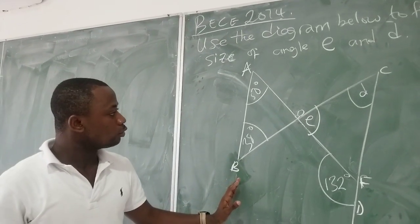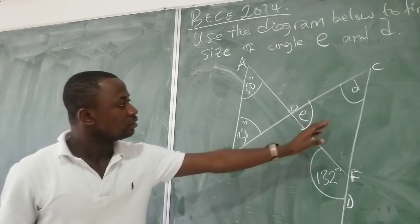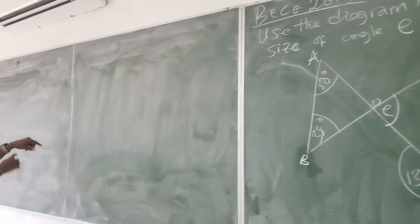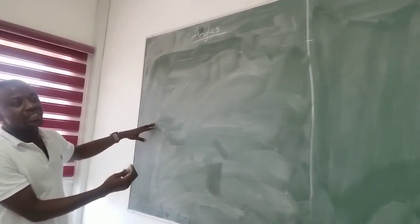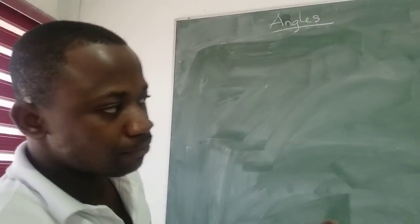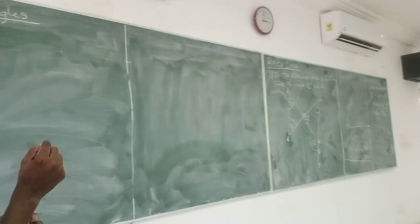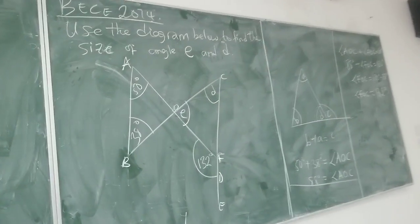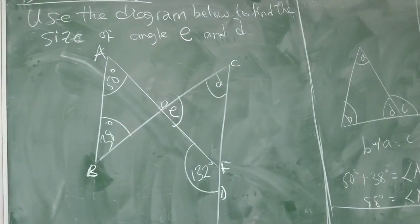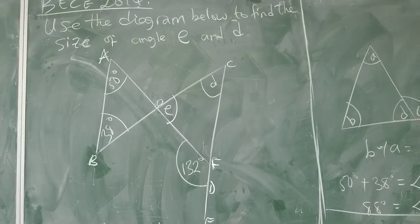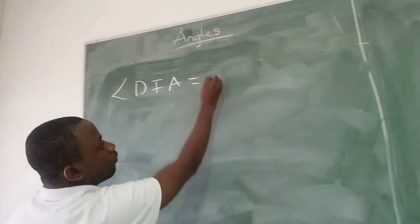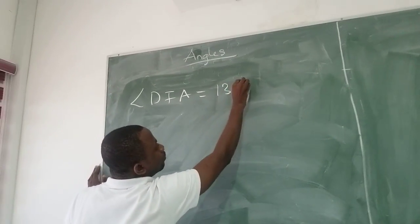Now we also have to find D. Angle FOC is equal to D. Angle DFA gives us 132 degrees.